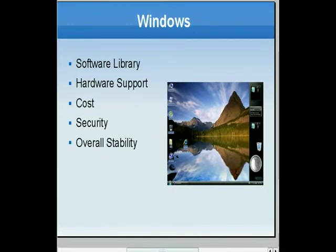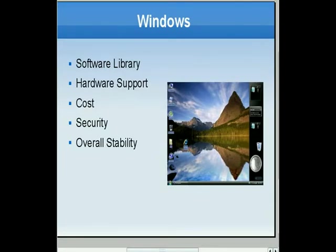Moving on to Windows: Windows' biggest advantage is its software library. Just about everybody who writes software writes software for Windows — it's the dominant platform and it makes economic sense to do that. Also, hardware vendors, for example when a new video card comes out or someone comes up with a new webcam, they make sure to write a driver that is compatible with the current version of Windows.